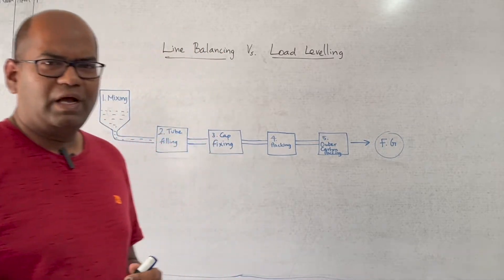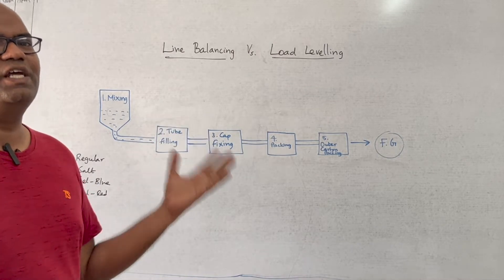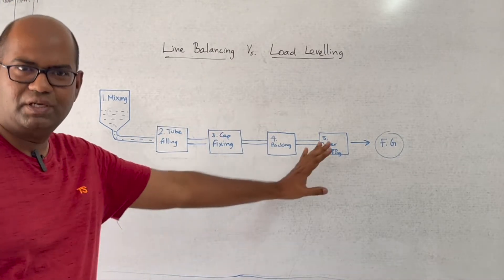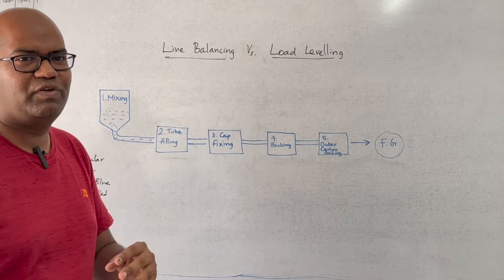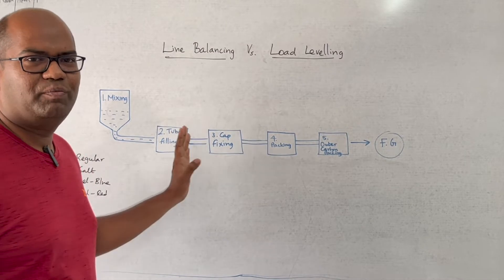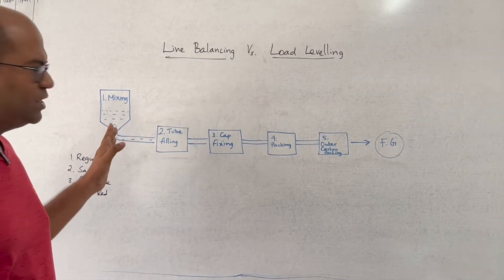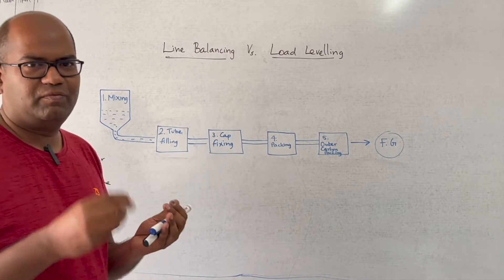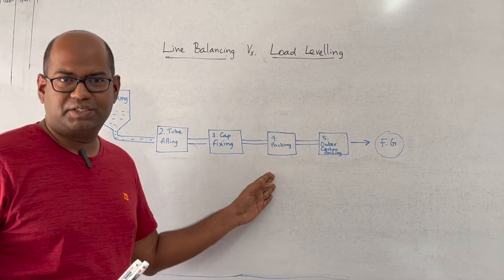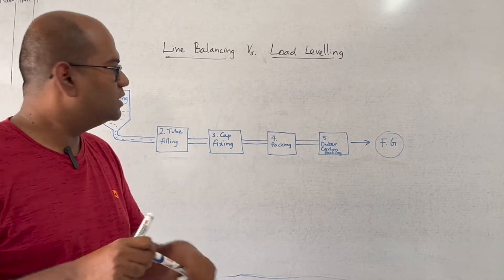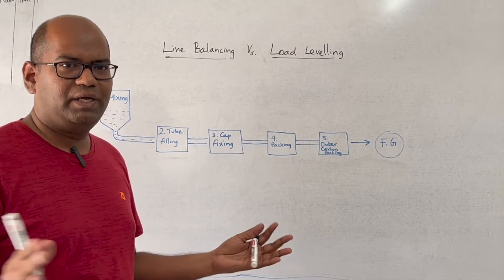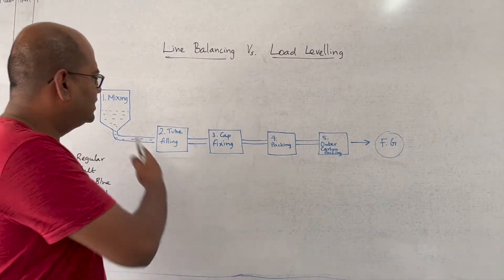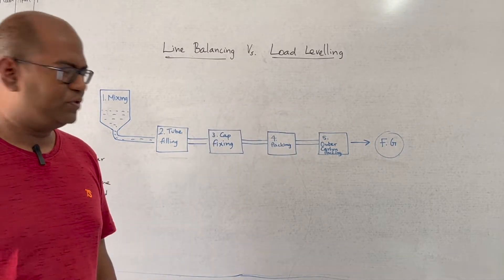I'm going to explain the process of an imaginary company which is manufacturing toothpaste. Let us say there are five different processes — this is my assumption. The raw materials are mixed in a mixing tank, then taken to tube filling where the paste is filled into a tube, then to cap fixing where the cap is put on the tube, then to the packing section where the tube is inserted into a small package, and finally to the outer carton — the master carton — and the box gets stored in a warehouse.